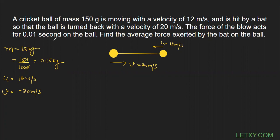The force of the blow acts for 0.01 seconds, so the time period t = 0.01 s. We need to find the average force exerted by the bat on the ball. There are two ways to find this. The first method is based on the formula F = ma. The second method is based on the impulse formula: Impulse = Force × Time, where that force is the average force.